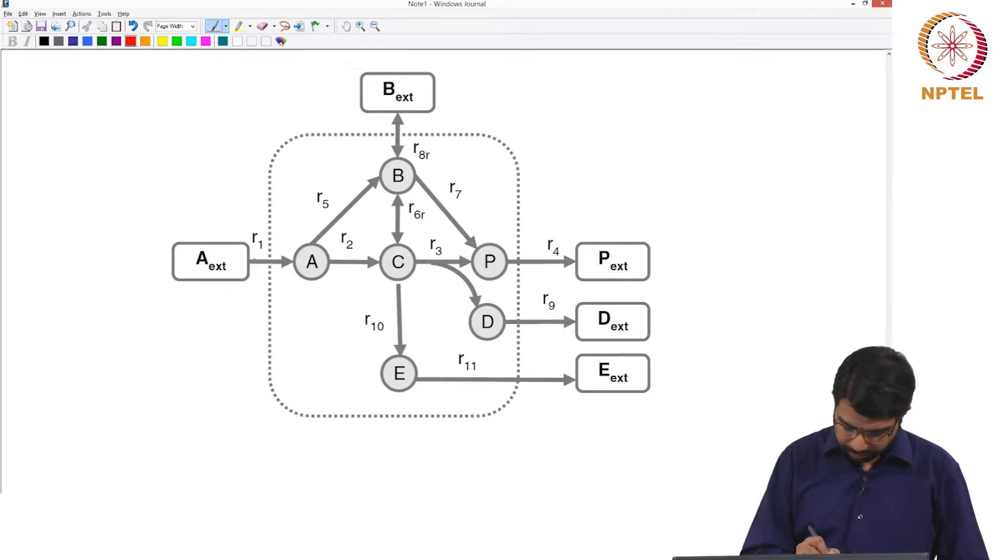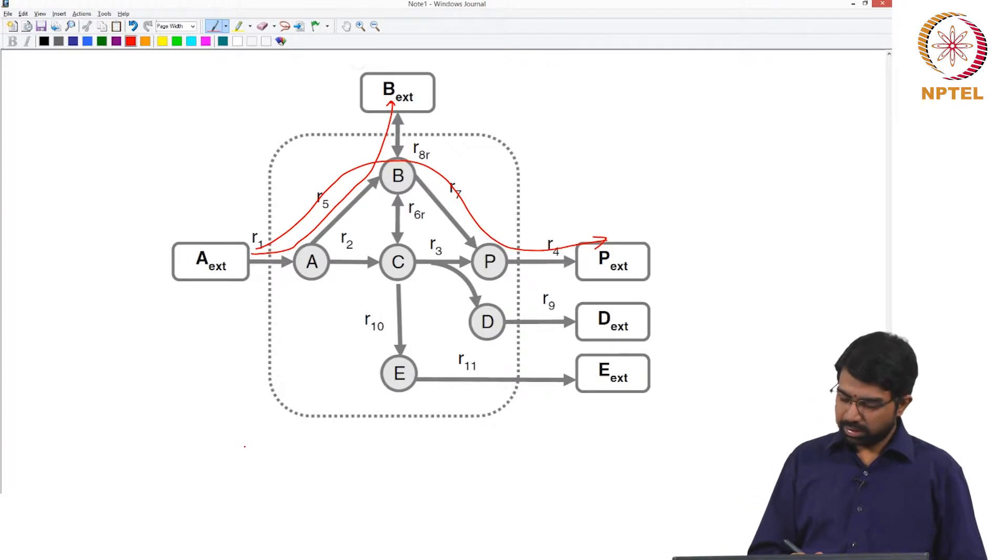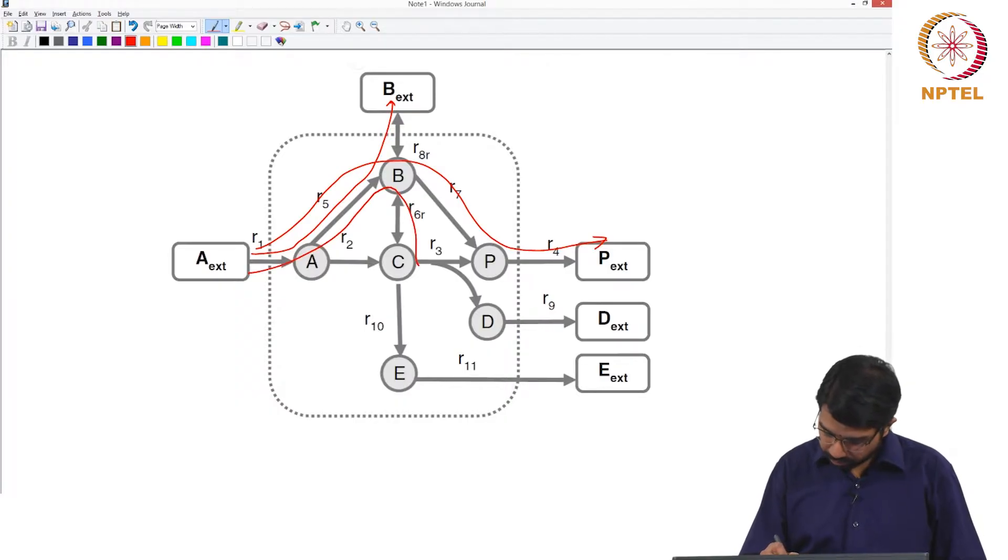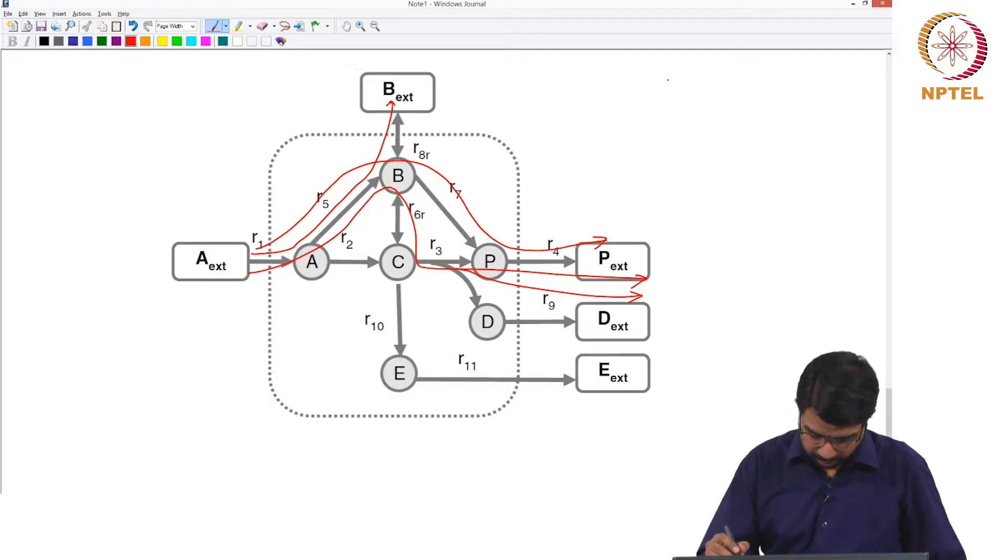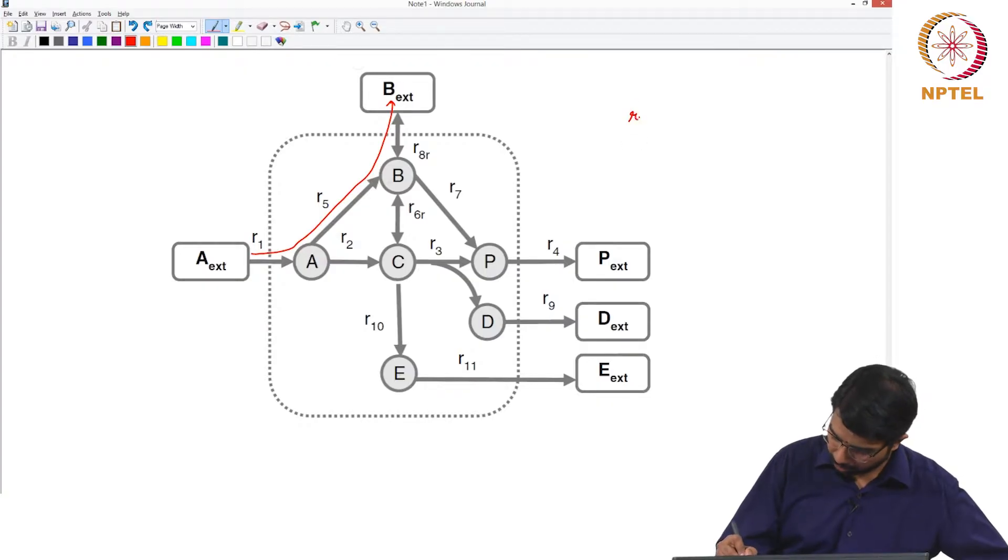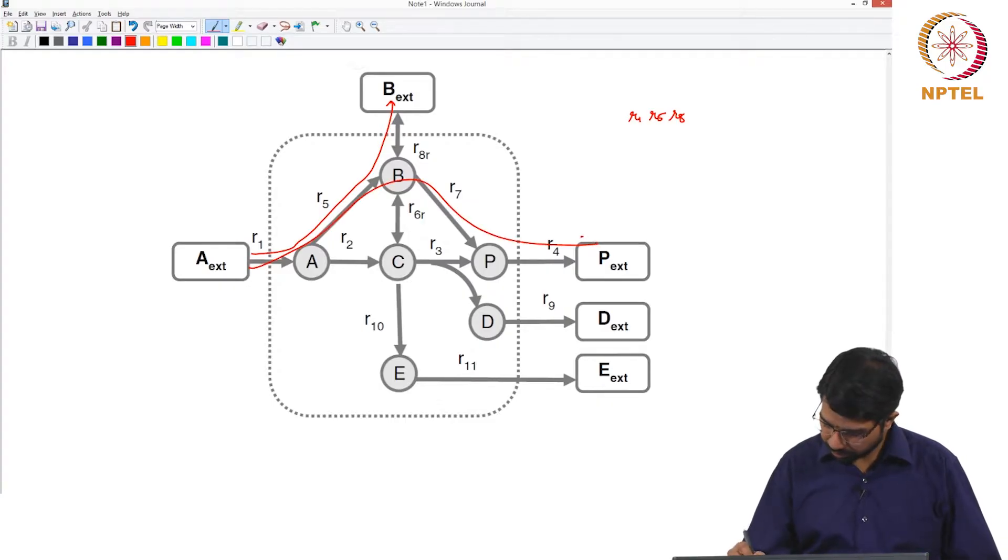This will be an elementary flux mode as well. This will also be an elementary flux mode, so B to P will be an extreme pathway. This is an interesting pathway. Let us write down, so this is the first extreme pathway: R1, R5, then you have R1, R5, R7, R4.